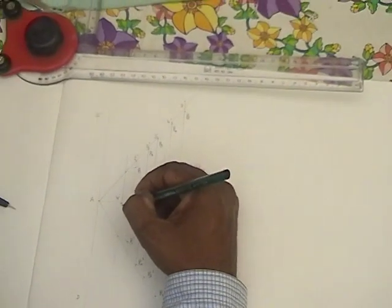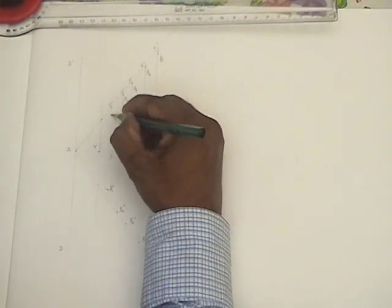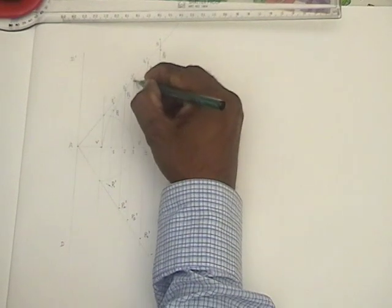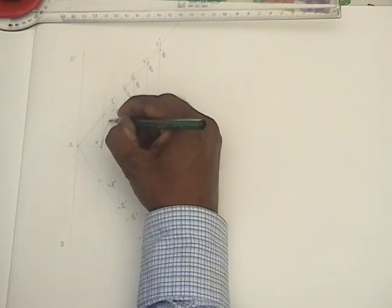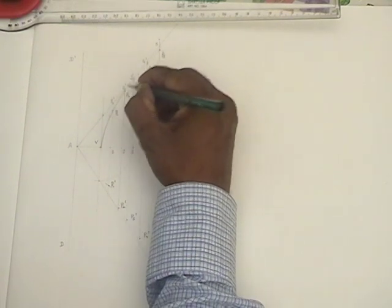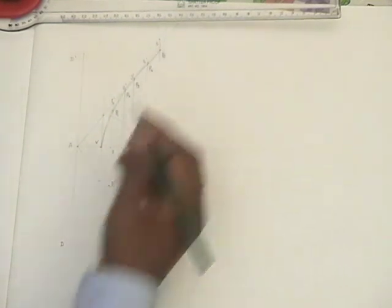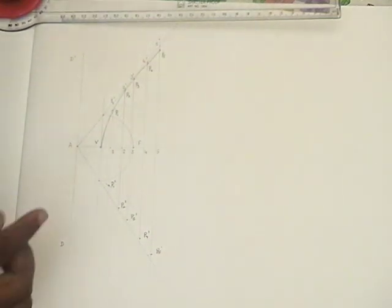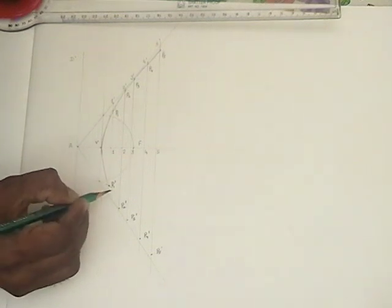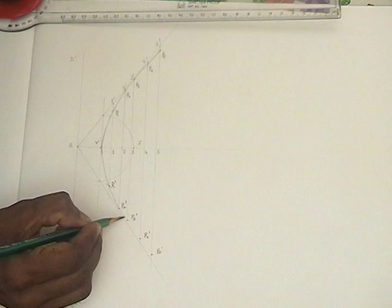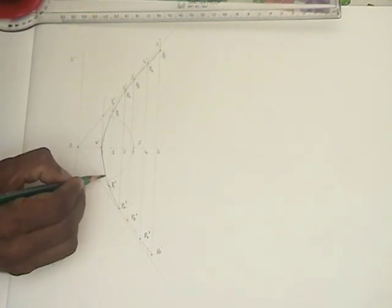Make smooth curves with the help of given points in order to get the required hyperbola. So without lifting the hand, try to join this smooth curve to get the required hyperbola. Place the same thing on the other side as well. Getting a smooth curve.